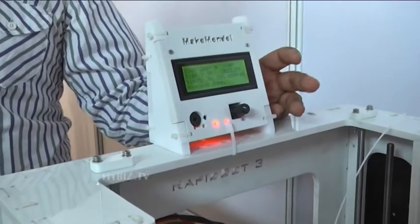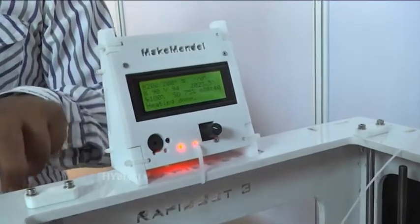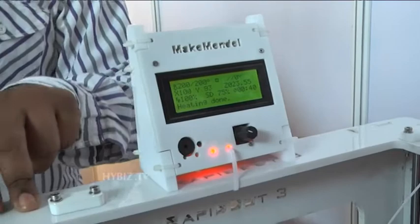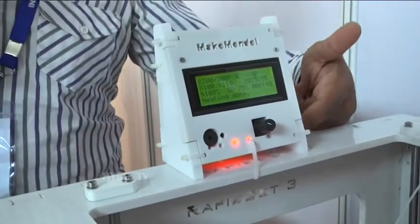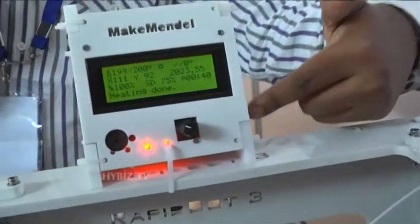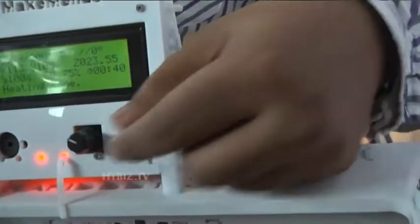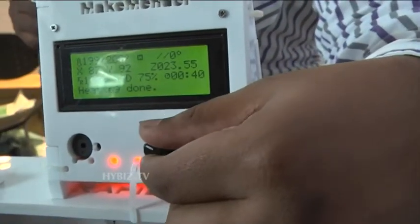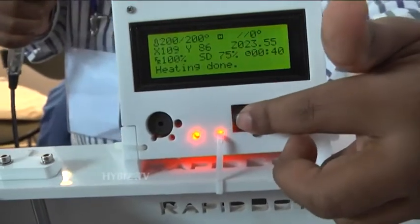G-Code is the code which is understood by this machine. Once that G-Code is generated, you can transmit it to this machine using a computer or using this SD memory card which is inserted here. Using these controls, you can control which file you have to print and the temperature settings.